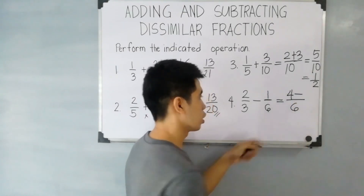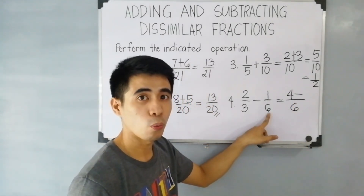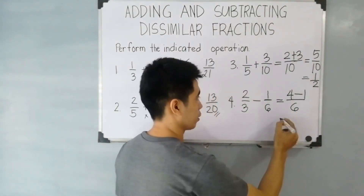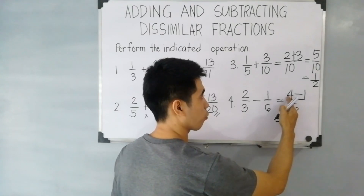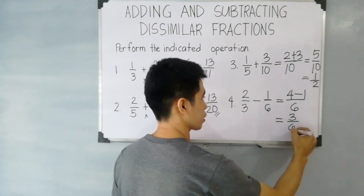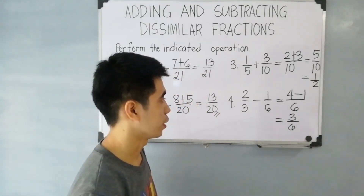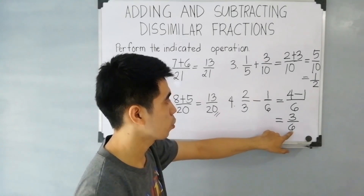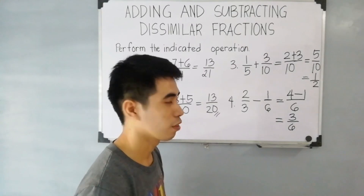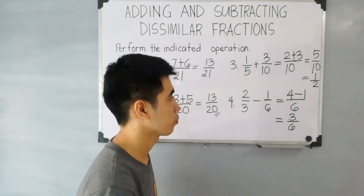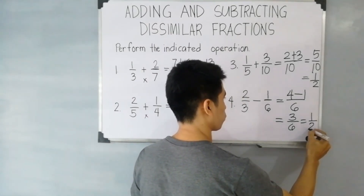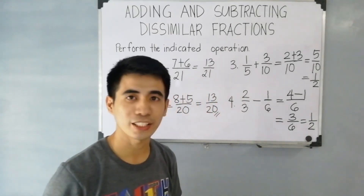Then 6 divided by 6 is 1, times 1, that is equal to 1. Then subtract 4 minus 1, that is equal to 3 over 6. We can simplify 3 over 6 since 6 is divisible by 3. Therefore, the GCF is 3. 3 divided by 3 is 1, and 6 divided by 3 is 2. So our final answer is 1 half.